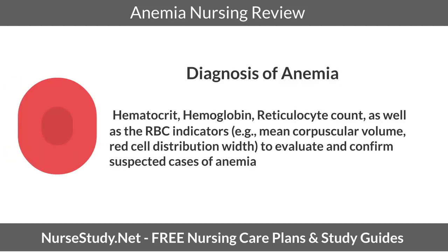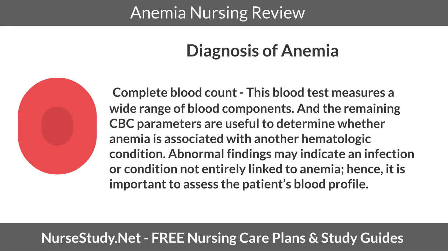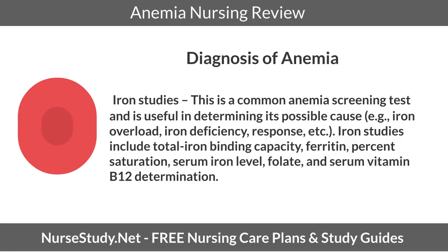Diagnosis of anemia. Hematocrit, hemoglobin, reticulocyte count, and RBC indicators are used to evaluate and confirm suspected cases of anemia. A complete blood count measures a wide range of blood components; the CBC parameters help determine whether anemia is associated with another hematologic condition, and abnormal findings may indicate infection or other conditions. Iron studies are a common anemia screening test useful for determining possible cause — whether iron overload, iron deficiency, etc. — and include total iron binding capacity, ferritin, percent saturation, serum iron level, folate, and serum vitamin B12 determination.